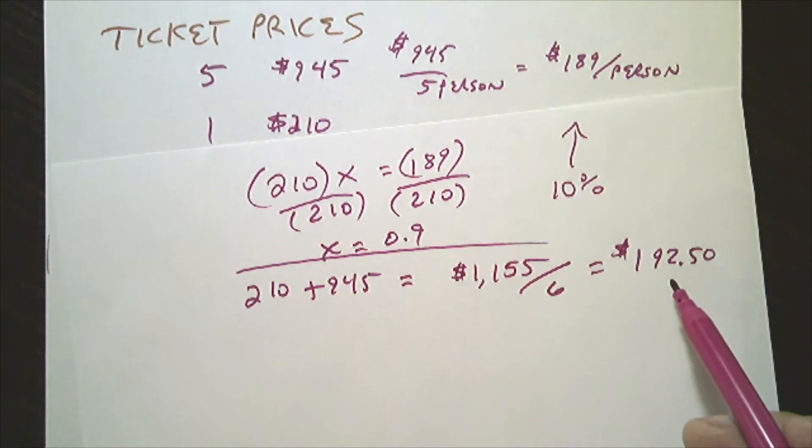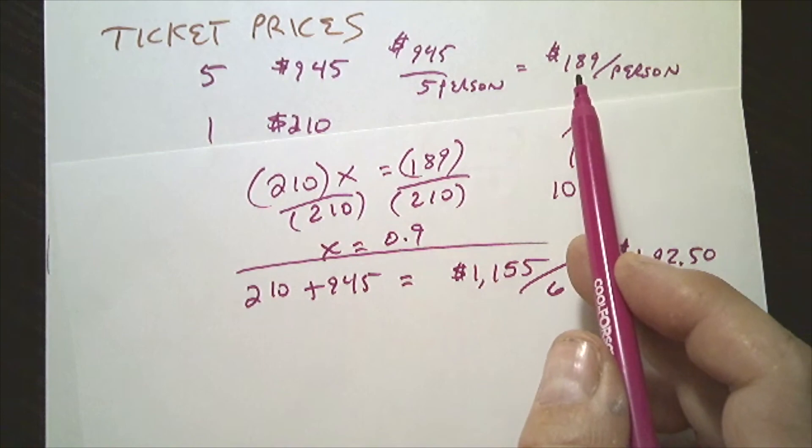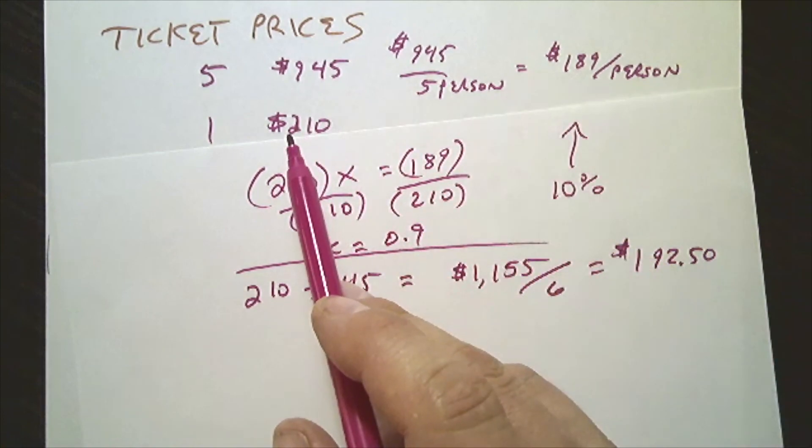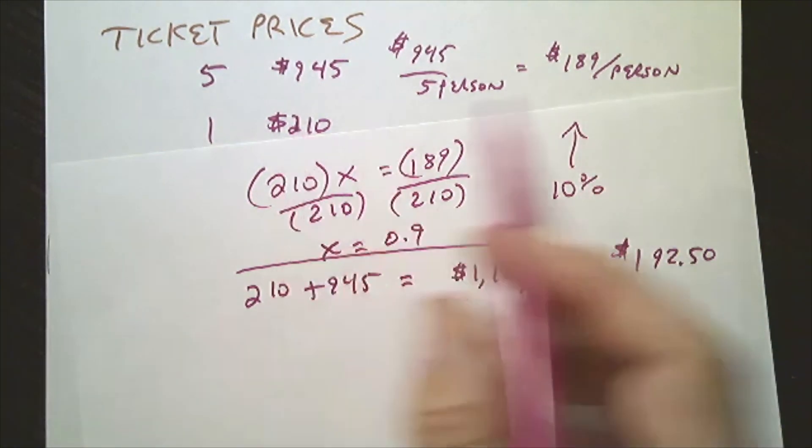Would you expect this number to be larger than the five-person price, but smaller than the sixth person? And that is accurate. It's between these two.